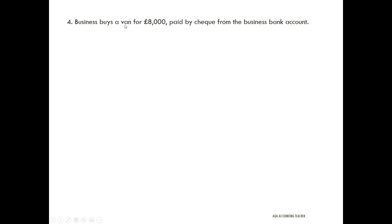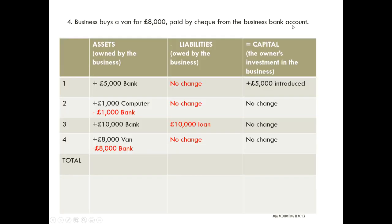For transaction four, the van account increases by £8,000 but £8,000 comes out of the bank account. There's no change to liabilities and no change to capital — the owner didn't pay for the van. The entire dual effect has occurred within the assets column: one asset increased while another decreased.